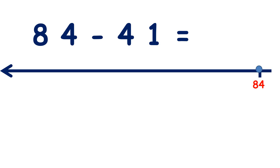We can subtract two-digit numbers on a number line. So here we have 84 minus 41. We have 84 at the end of our number line because that's the number we're subtracting from. Now if we're subtracting 41, we need to subtract four tens and then one unit. So if we count back in tens from 84,